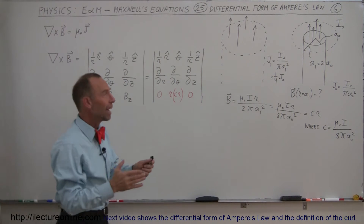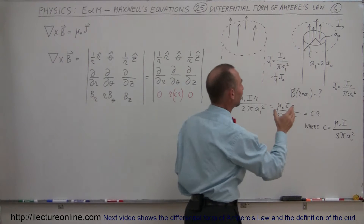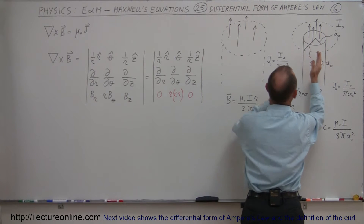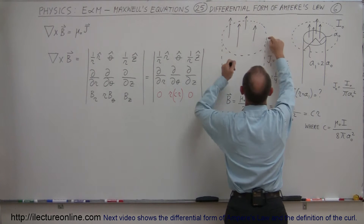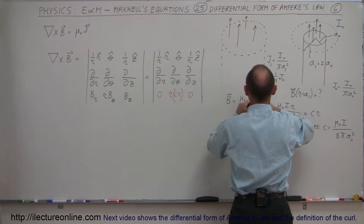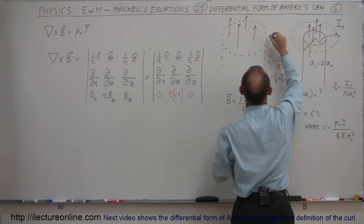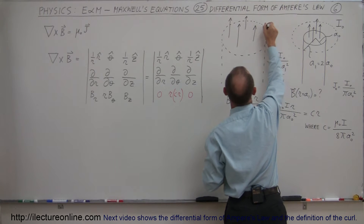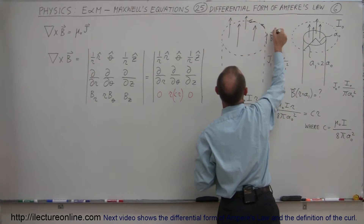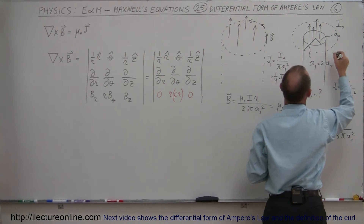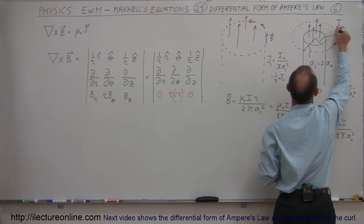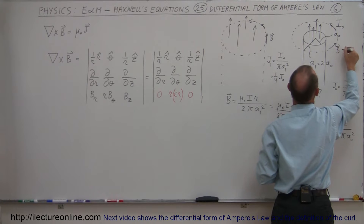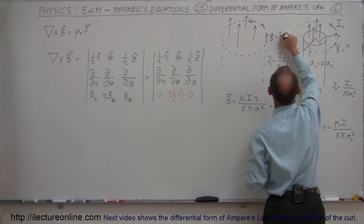How do we do that? We imagine that the same amount of current that we had before in a narrower region is now spread over a wider region, because we want to find the B-field right at a specific point. The B-field goes around in a circular fashion, so it's a function of theta. We want to find the B-field at this region — that's what we're trying to find out.